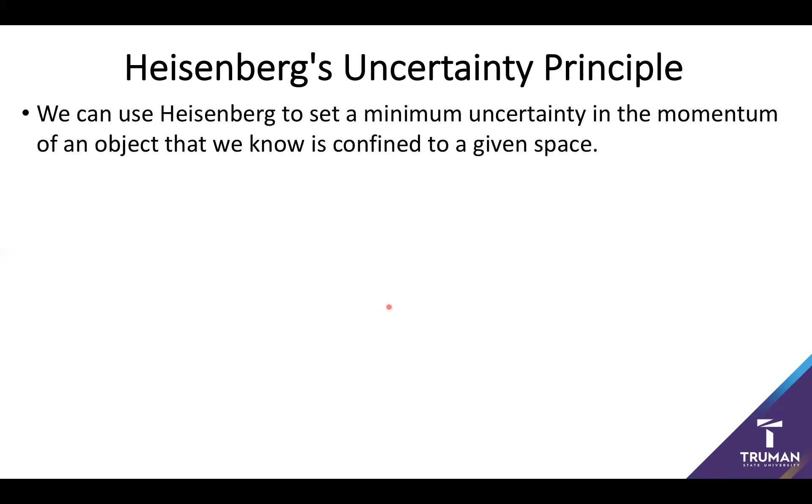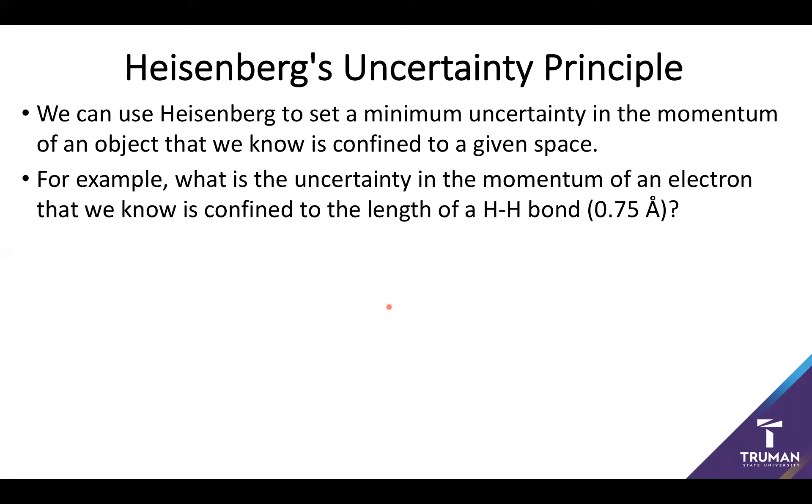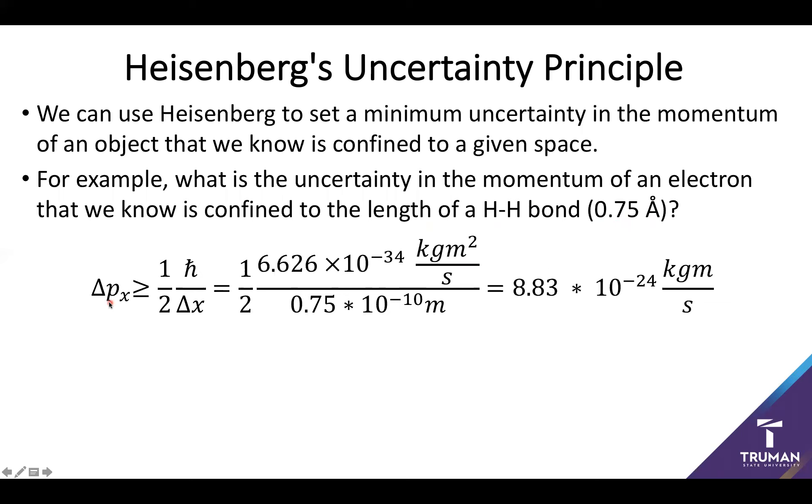For now though, I'd like to kind of spend a little bit of time really showing how we can apply the uncertainty principle. So one of the classic applications of the uncertainty principle is looking at a particle in a confined space. So let's say I have an electron that's confined somewhere along a hydrogen hydrogen bond. So this has a distance of about 0.75 angstroms, and I want to know what's going to be the uncertainty in the momentum if I have an uncertainty of about 0.75 angstroms. So we can essentially do this by setting up our equivalence. We can go ahead and divide both sides by the uncertainty in the position as that's what I already know. And now I have the uncertainty, the minimum uncertainty in the momentum expressed as a function of h bar and the uncertainty in the position.